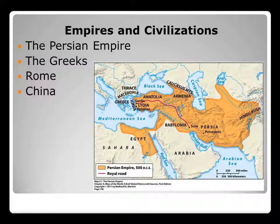The four empires and civilizations that Strayer will talk about in this chapter are the Persian Empire, the Greek Empire, the Roman Empire, and China. He will explore how they came to be, and he will talk about the similarities and differences between them. Pay attention to how did they grow, why did they rise in certain areas, what caused them to consolidate, and what led to their decline.